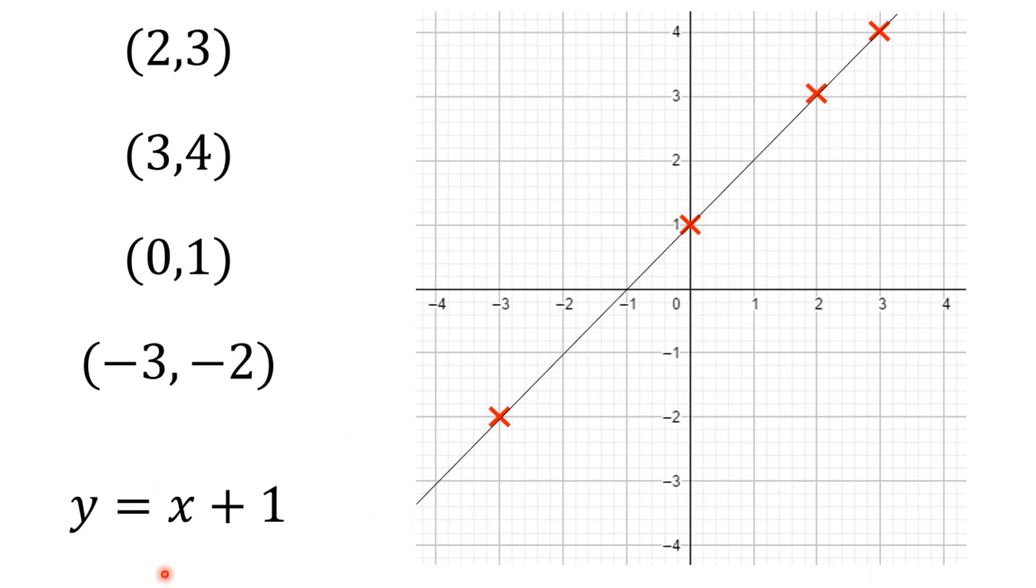And we call this a linear equation. We call it an equation because it's got an equal sign in it. And we call it linear because it's describing a straight line.